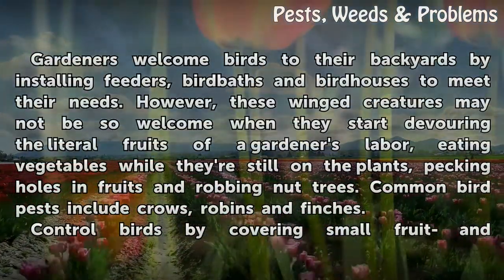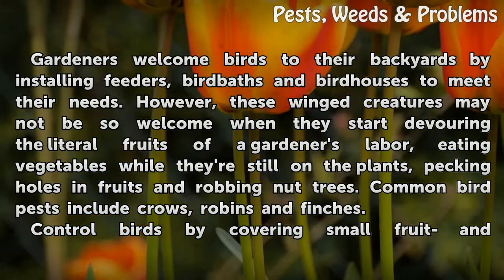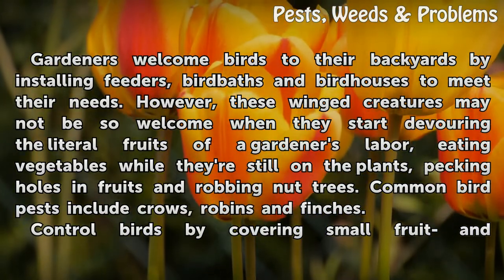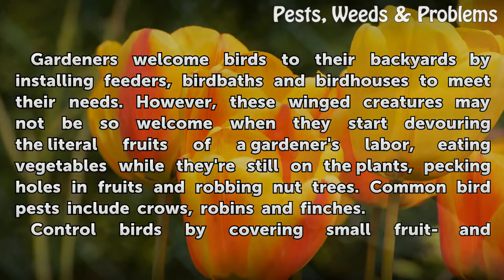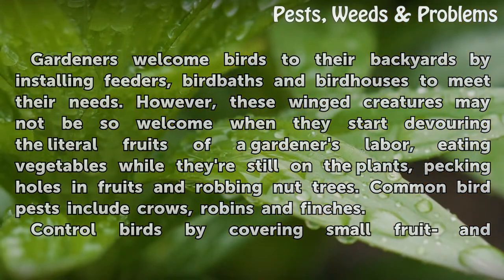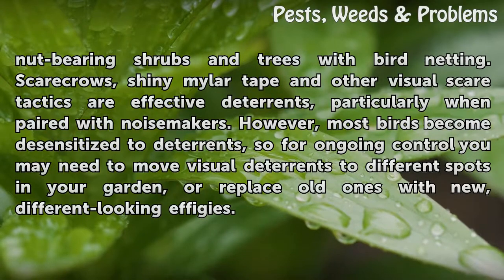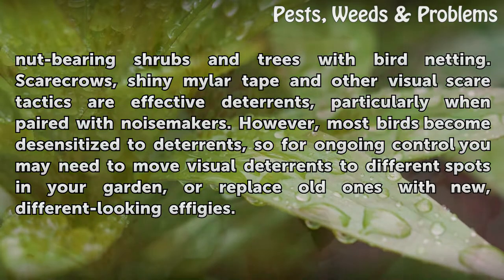Birds: gardeners welcome birds by installing feeders, bird baths, and birdhouses, but these winged creatures may not be so welcome when they start devouring vegetables still on the plants, pecking holes in fruits, or robbing nut trees. Common bird pests include crows, robins, and finches. Control birds by covering small fruit-bearing shrubs and trees with bird netting. Shiny mylar tape and other visual scare tactics are effective deterrents, especially paired with noisemakers, but most birds become desensitized, so move visual deterrents to different spots or replace them with new, different-looking effigies.